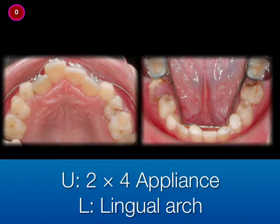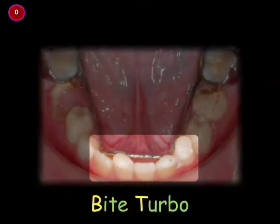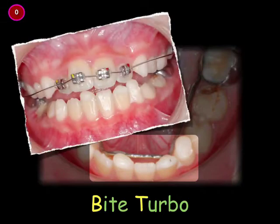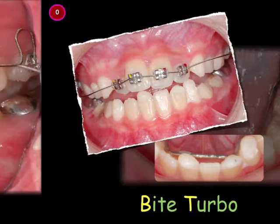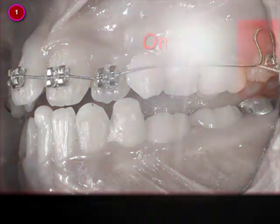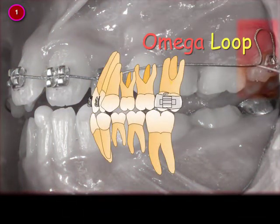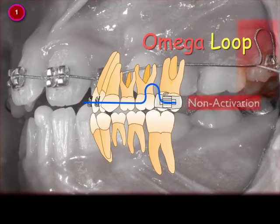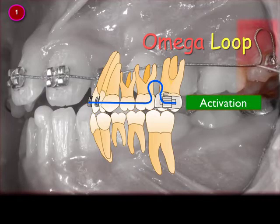We started with a 2x4 appliance on the upper arch and used a lingual arch on the lower for space maintenance. A bitplate was used to open the bite to correct the anterior crossbite. At the same time we used an omega loop to flare the upper incisors. Please look at the animation — the upper incisors were flared after the wire was placed and activated.